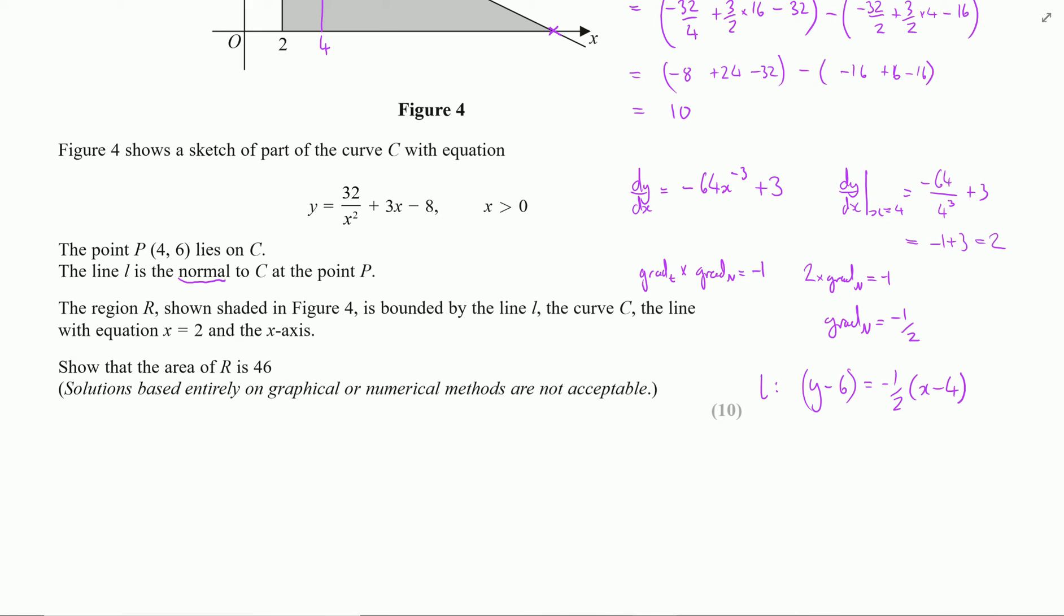All I'm interested in is where this line intersects the x-axis, which is where y is 0. So let's look at what happens when I let y equal 0. This becomes negative 6 equals minus 1 half of x minus 4. Rearranging, that becomes 12 equals x minus 4, or 16 equals x.